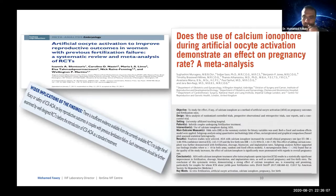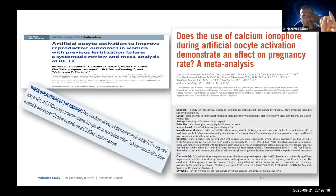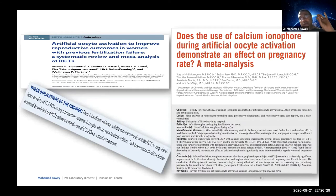Calcimycin, ionomycin, and puromycin increase membrane permeability to extracellular calcium and induce a single prolonged calcium wave. These are what are known on the market as calcium ionophores — whether calcimycin, ionomycin, puromycin, or others — and they produce a single calcium wave artificially.